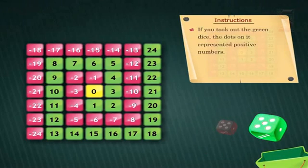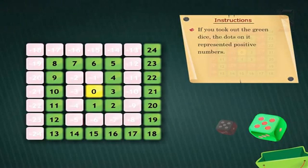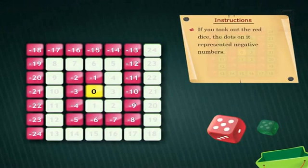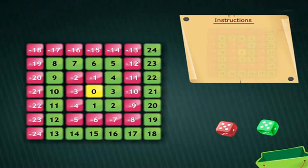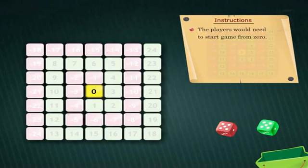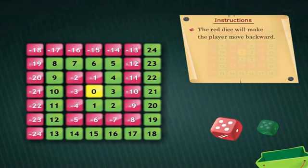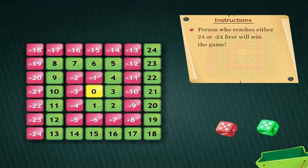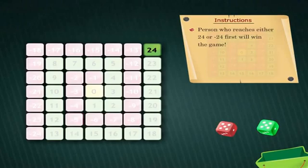If you took out the green dice, the dots on it represented positive numbers. The players would need to start game from zero. The red dice will make the player move backward and the green dice will make the player move forward. The person who reaches either positive 24 or negative 24 first will win the game.